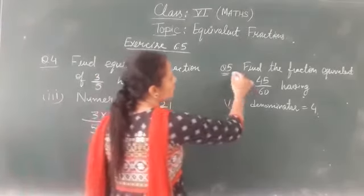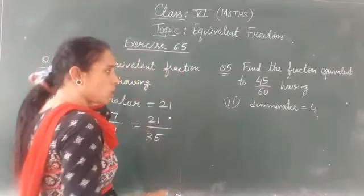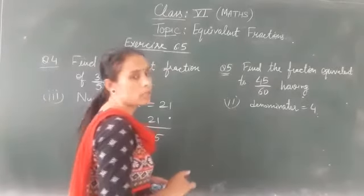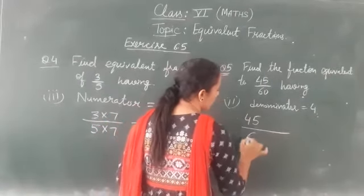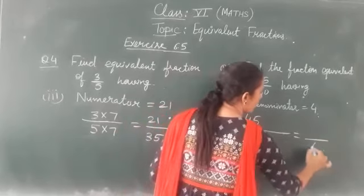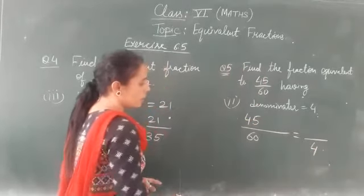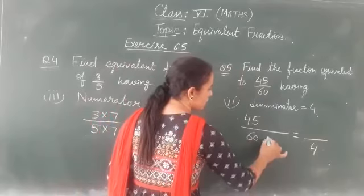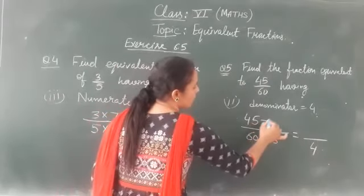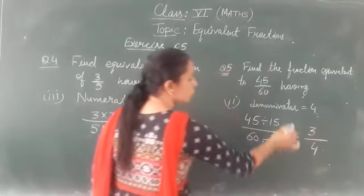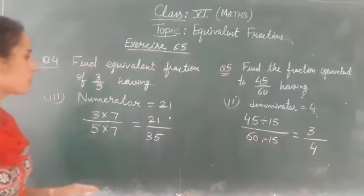Similarly see question number 5, find a fraction equivalent to 45 upon 60 having denominator 4. So its denominator should be 4. Now you can see that if you divide this with 15, you will get 4. Then divide this also by 15. So you will get 3. So 3 by 4 is the equivalent fraction of this.